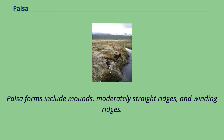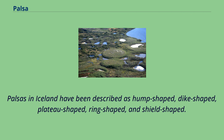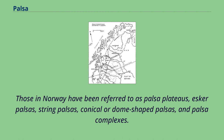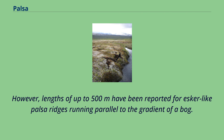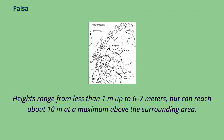Palsa forms include mounds, moderately straight ridges, and winding ridges. Palsas in Iceland have been described as hump-shaped, dike-shaped, plateau-shaped, ring-shaped, and shield-shaped. Those in Norway have been referred to as palsa plateaus, esker palsas, string palsas, conical or dome-shaped palsas, and palsa complexes. Widths are commonly 10 to 30 meters, and lengths 15 to 150 meters. However, lengths of up to 500 meters have been reported for esker-like palsa ridges running parallel to the gradient of a bog. Heights range from less than 1 meter up to 6 to 7 meters, but can reach about 10 meters at a maximum above the surrounding area.